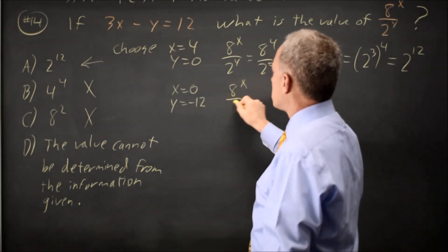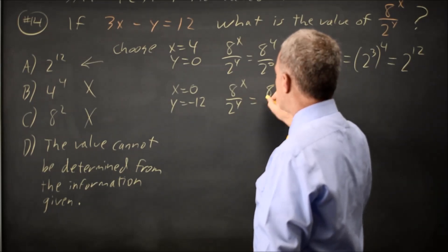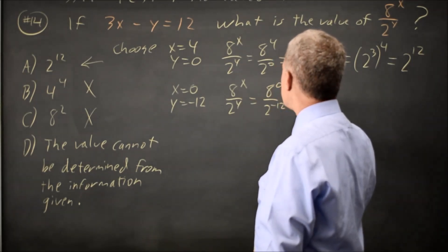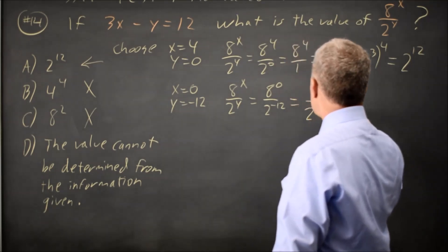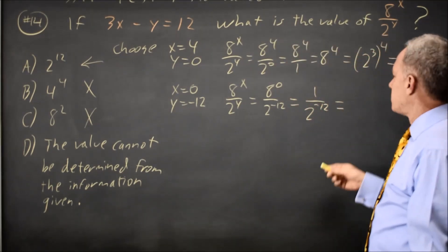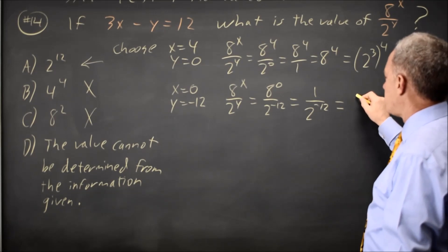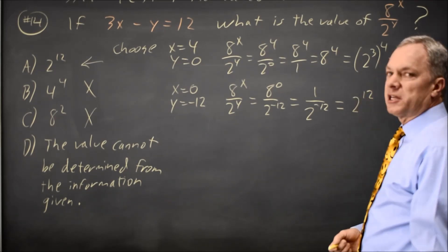8 to the x over 2 to the y is 8 to the 0 over 2 to the negative 12. 8 to the 0 is 1. 2 to the negative 12 in the denominator is the same as 2 to the 12 in the numerator, so that's 2 to the 12, which matches.